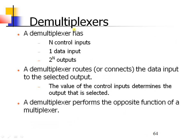Now let us see our next concept: demultiplexers. Demultiplexers perform the converse operation of the multiplexer. This circuit accepts N control inputs along with one data input and produces 2^N outputs. It receives only one input, which is routed to any one of the output lines, and that output line is selected with the help of the control inputs.